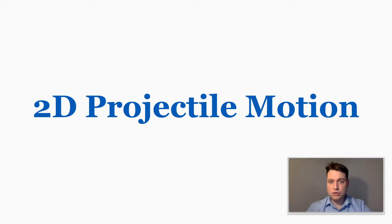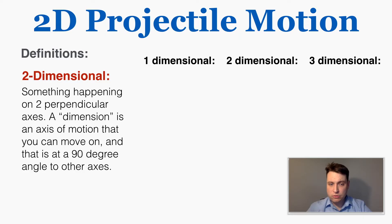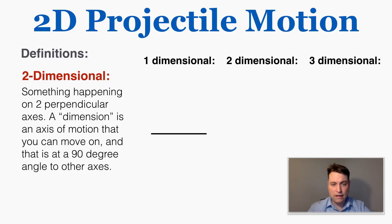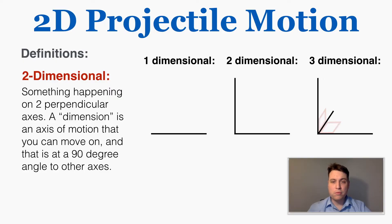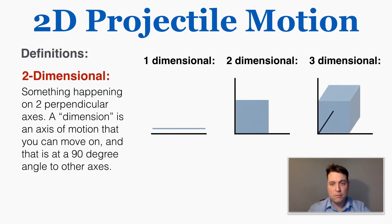This lecture is going to be about two-dimensional projectile motion, and the first thing we're going to do is define those two words. For something to be two-dimensional means that it's happening on two perpendicular axes at the same time. A dimension is an axis of motion at a 90 degree angle to other axes. So far we've been talking about motion in just one dimension — back and forth along a straight line — but it's possible for motion to happen in two dimensions at the same time, moving up and down and left and right.